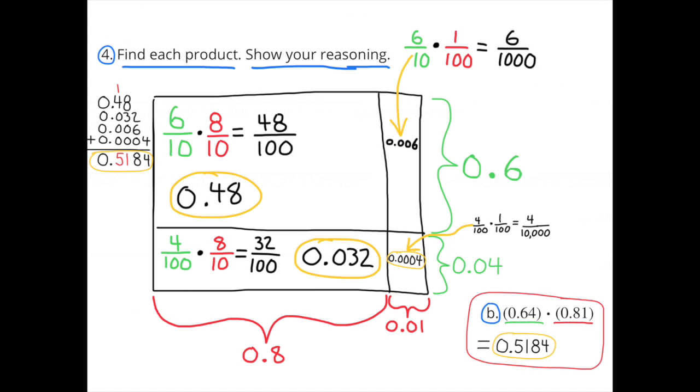The total area of all 4 sub-rectangles is 0.5184 units squared. Or the product of 0.64 and 0.81 is 0.5184.